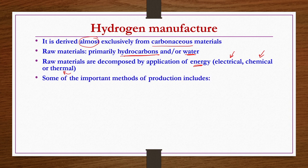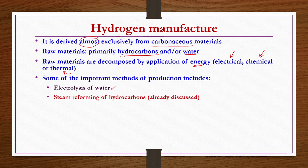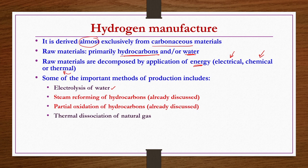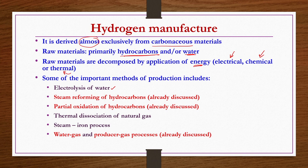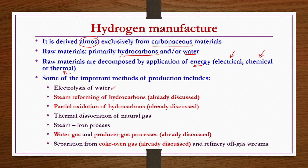Some important methods of production of hydrogen include: electrolysis of water, steam reforming of hydrocarbons, partial oxidation of hydrocarbons, thermal dissociation of natural gas, steam iron processes, water gas and producer gas processes, and separation from coke oven gas and refinery gas streams. Some of these processes, highlighted in red, have already been discussed in previous lectures.